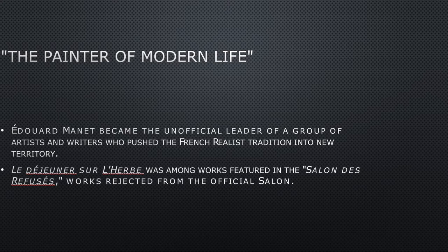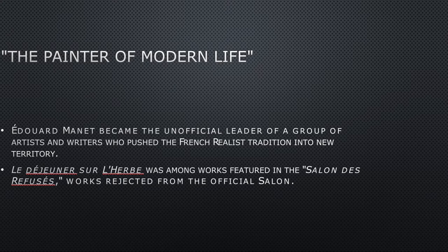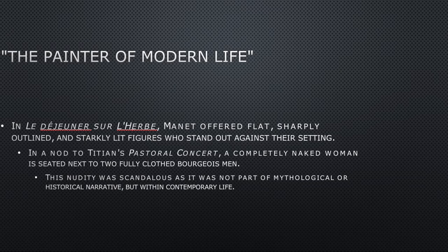Now we're going to look at a painter who's considered possibly the most influential or significant painter of the 19th century — this is Édouard Manet. He became the unofficial leader of a group of artists and writers who pushed the French realist tradition into new territory. We're going to see his painting 'Déjeuner sur l'herbe,' or 'The Luncheon on the Grass,' which was among works featured in the Salon des Refusés — works rejected from the official salon. A group of these radical avant-garde artists, the people who were rebelling against all traditions and all norms, had their own exhibit. This is how our world changes.